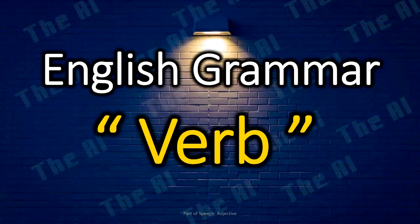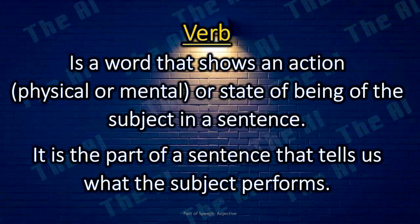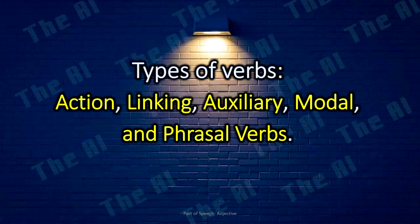Verb. The verb is a word that shows an action, physical or mental, or state of being of the subject in a sentence. It is the part of a sentence that tells us what the subject performs. Here are the different types of verbs in English grammar.